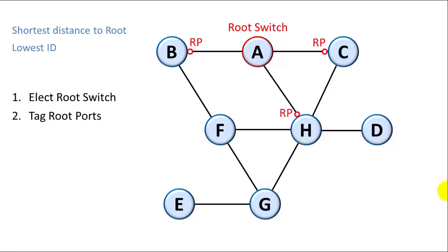So first there are three switches that are directly connected to the root switch. Switch B has a root port directly connected to A. Switch C has a port directly connected to A, and switch H also does. So we label those as the root port.